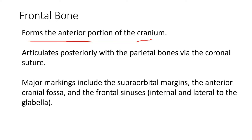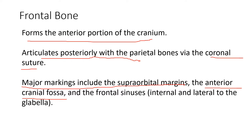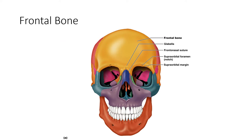The frontal bone forms the anterior portion of the cranium. It articulates posteriorly with the parietal bones via the coronal suture. The major markings of the frontal bone include the supraorbital margins, the anterior cranial fossa, and the frontal sinuses, internal and lateral to the glabella. The glabella is the protruding portion here, and there's a frontal nasal suture between the frontal and the nasal bones, plus a supraorbital foramen and supraorbital margin.